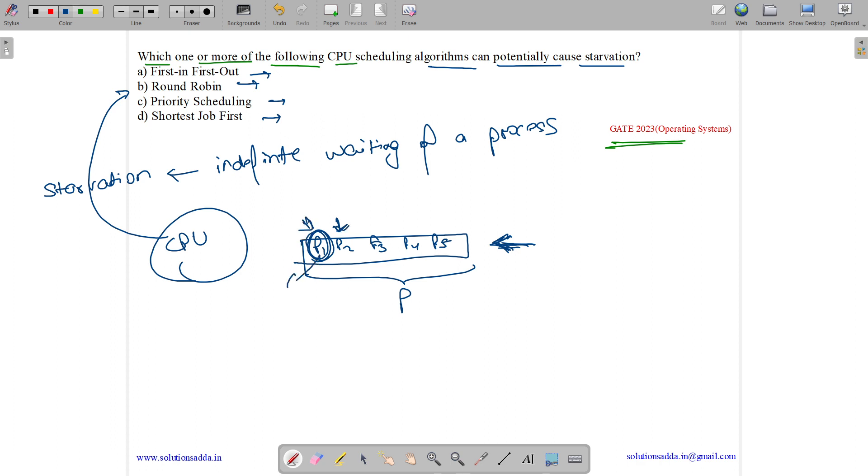It might execute in 100 years or 200 years but it will definitely complete. When P1 completes, P2 will get a chance. Is there a possibility that a new process comes and gets scheduled before P2? No, as it is first-in-first-out. So there is no starvation.